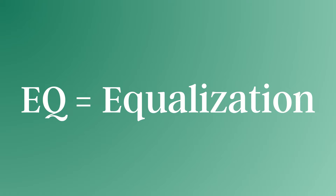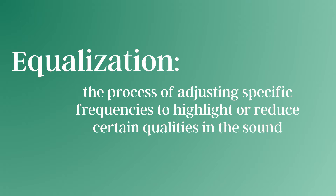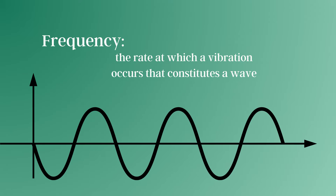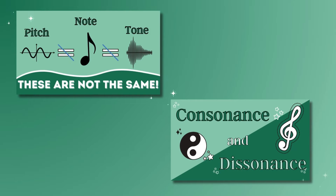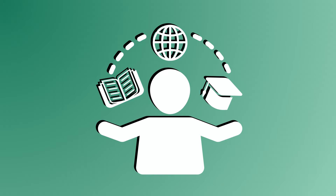EQ is short for equalization. In music, this is the process of adjusting specific frequencies to highlight or reduce certain qualities in the sound. To understand this concept deeper, I recommend watching my video on pitch, tone, and note, as well as the episode on consonance and dissonance. These videos are not required to understand the content in this video, but will definitely help you internalize the idea.